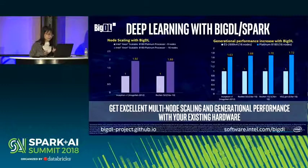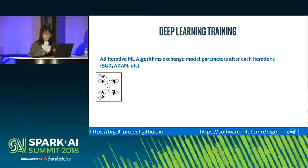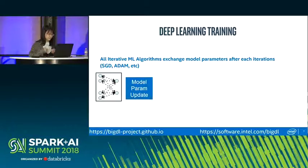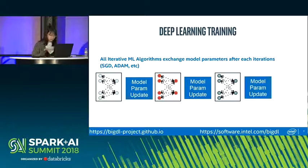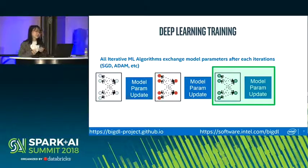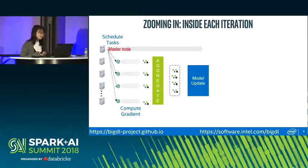So why does BigDL have such high scalability? Let's first look at how the deep learning training process works. Deep learning training is an iterative process — in each iteration it computes the gradients, then updates the weights, then computes the gradients again, and so on. When you stop computing gradients, your training is finished and you have a trained model.